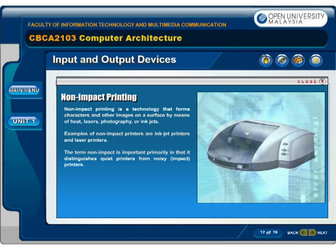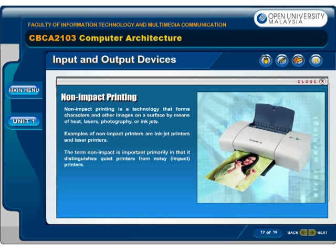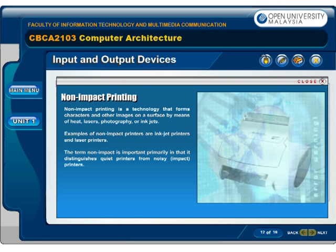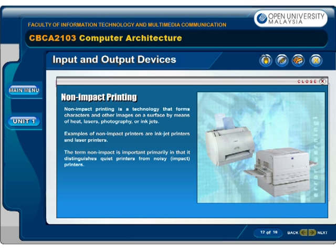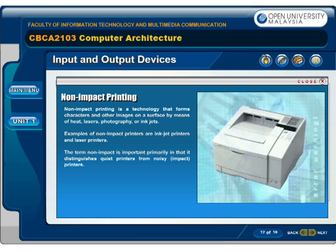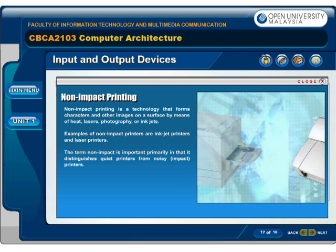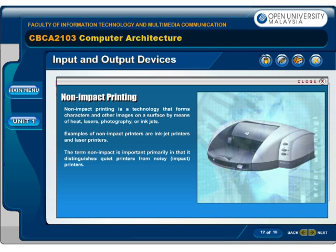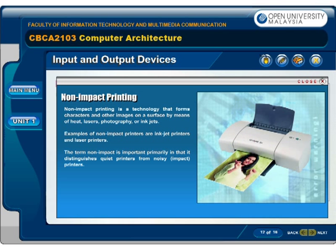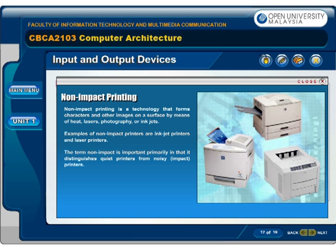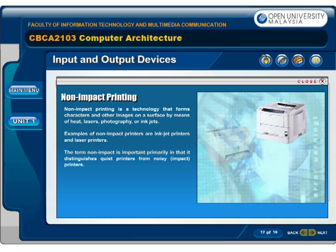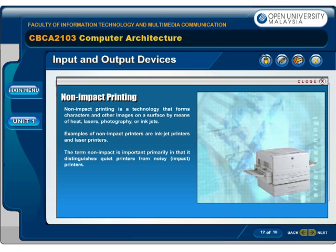Non-impact printing is a technology that forms characters and other images on a surface by means of heat, lasers, photography, or inkjets. Examples of non-impact printers are inkjet printers and laser printers. The term non-impact is important primarily in that it distinguishes quiet printers from noisy or impact printers.